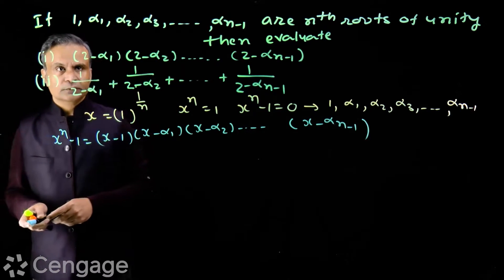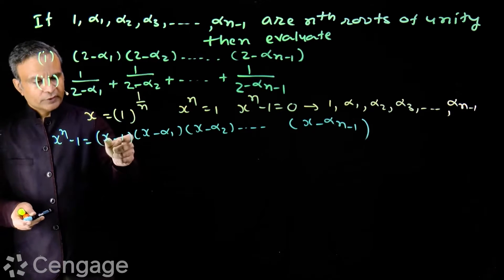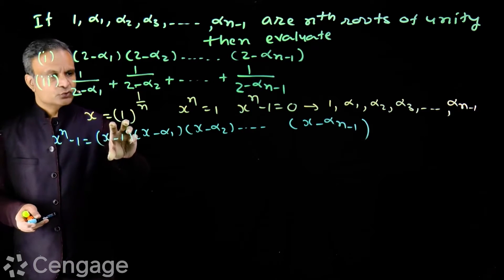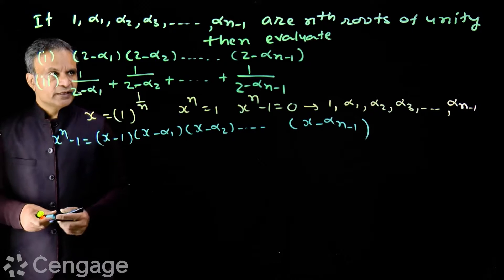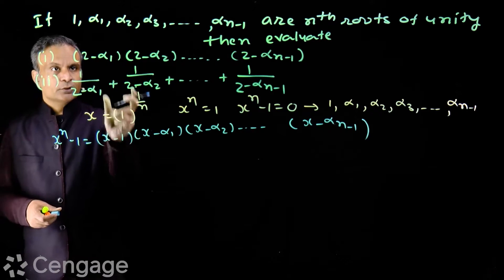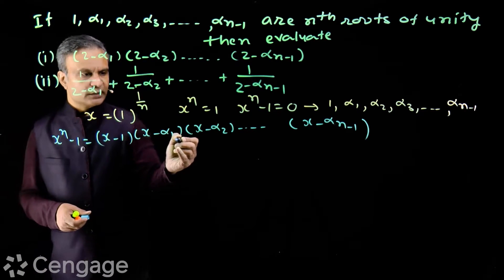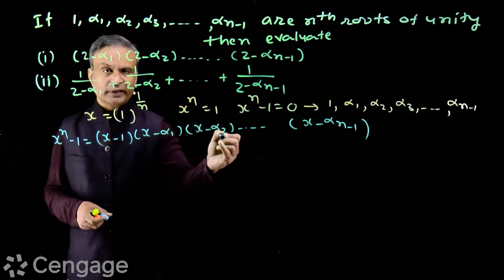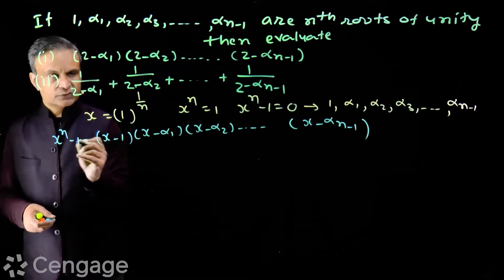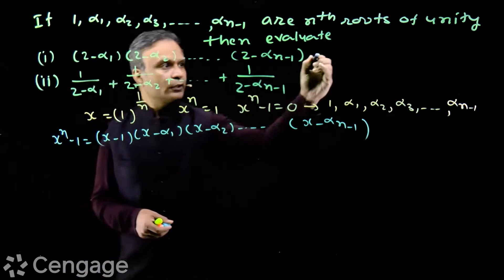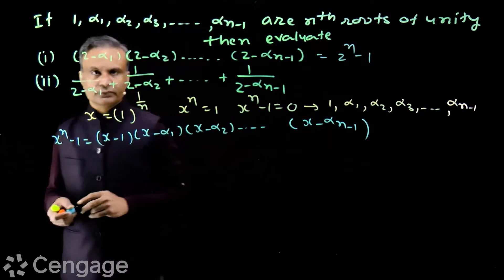To find the value of the first expression, we replace x with 2. Putting x = 2, we get (2 - 1)(2 - α₁)(2 - α₂)...(2 - αₙ₋₁) = 2^n - 1. Therefore (2 - α₁)(2 - α₂)...(2 - αₙ₋₁) = 2^n - 1.